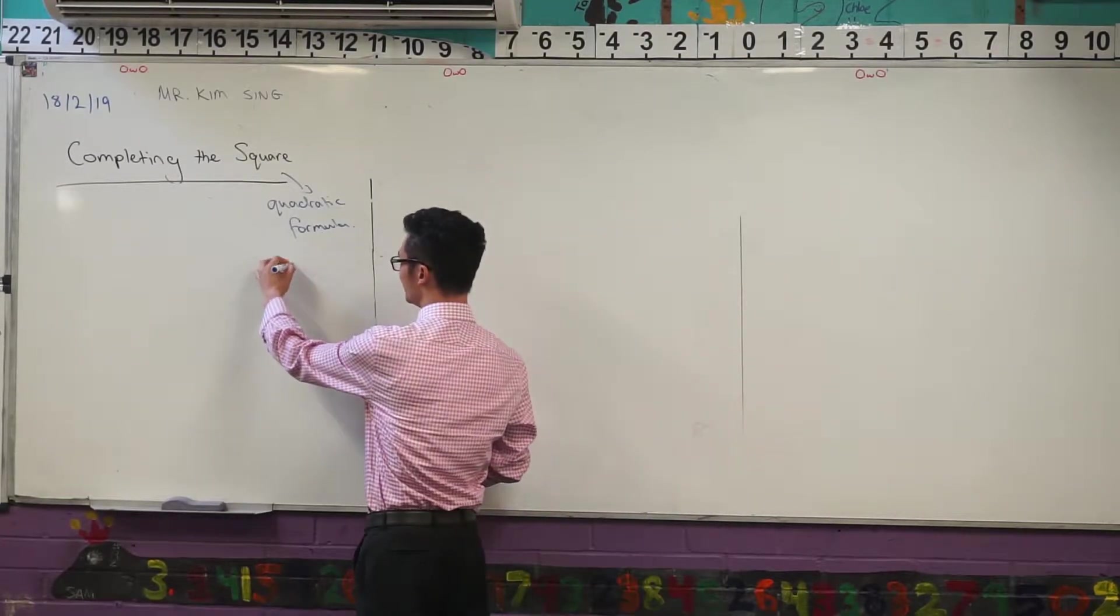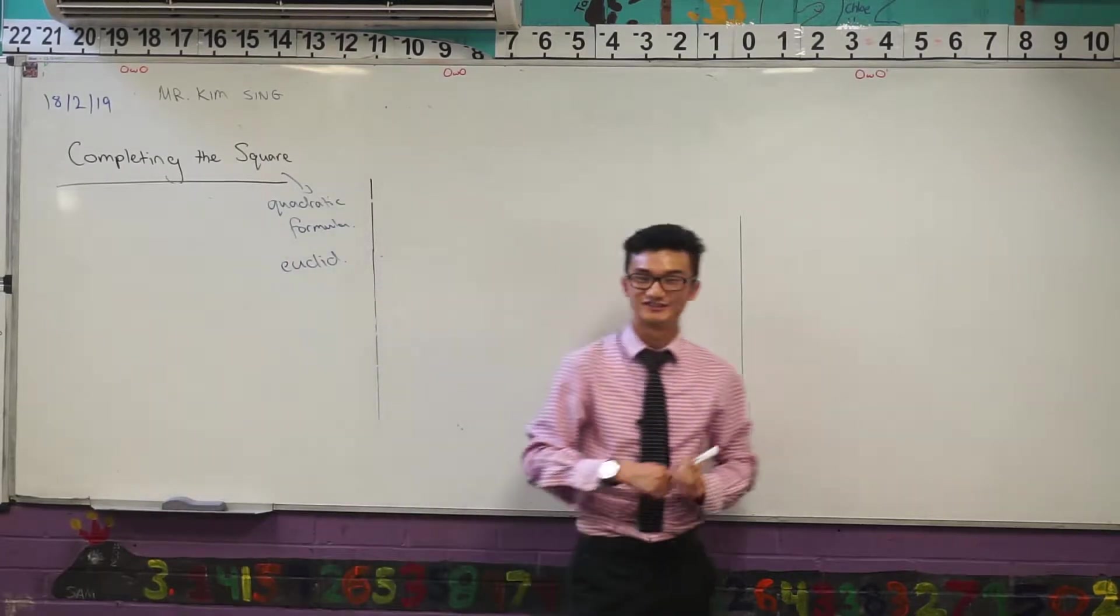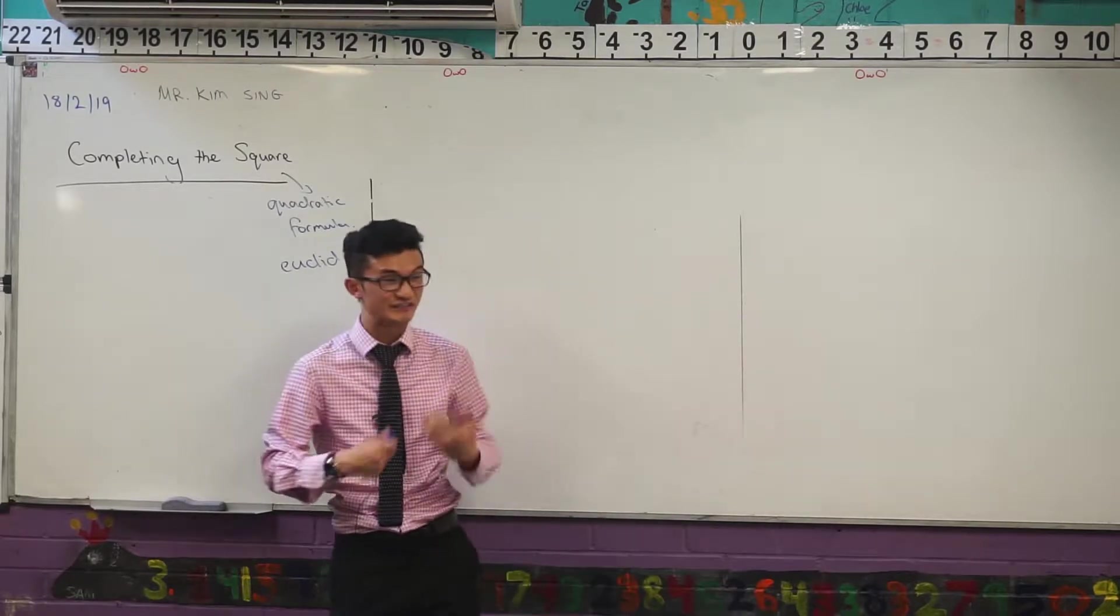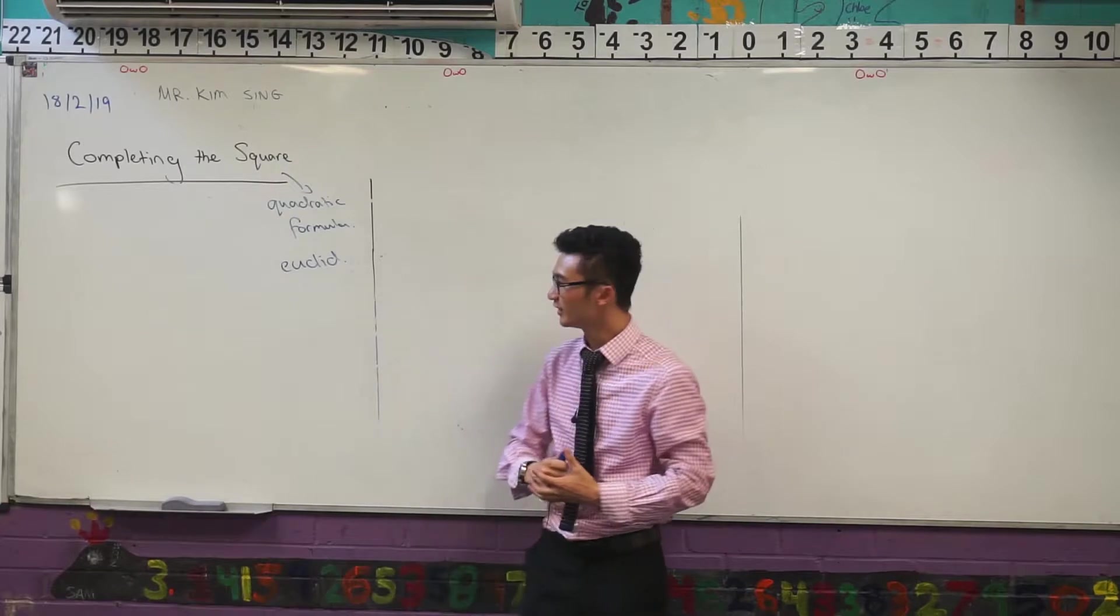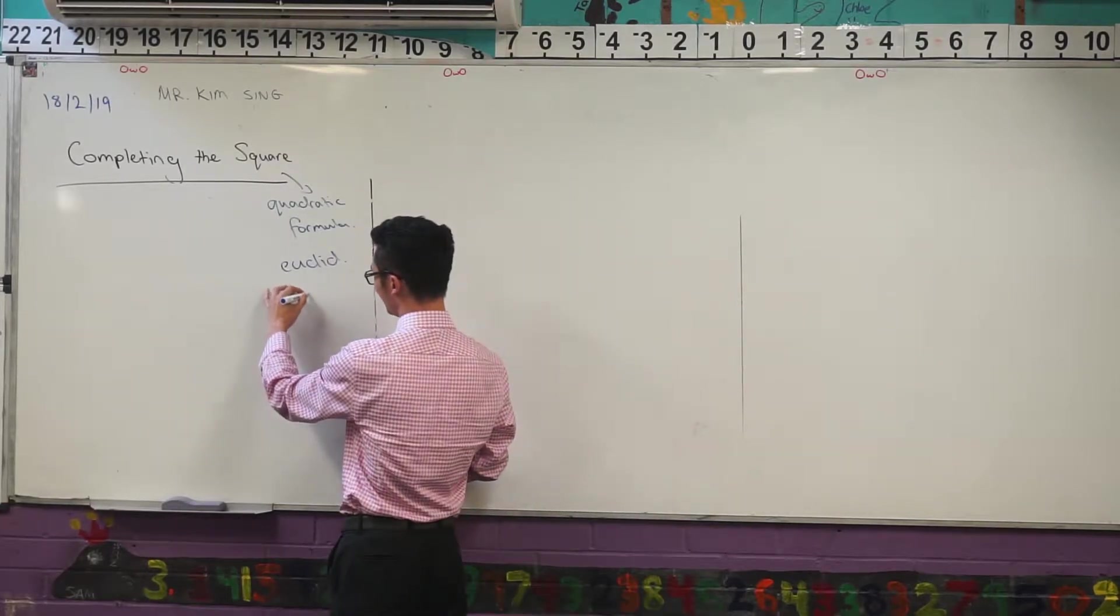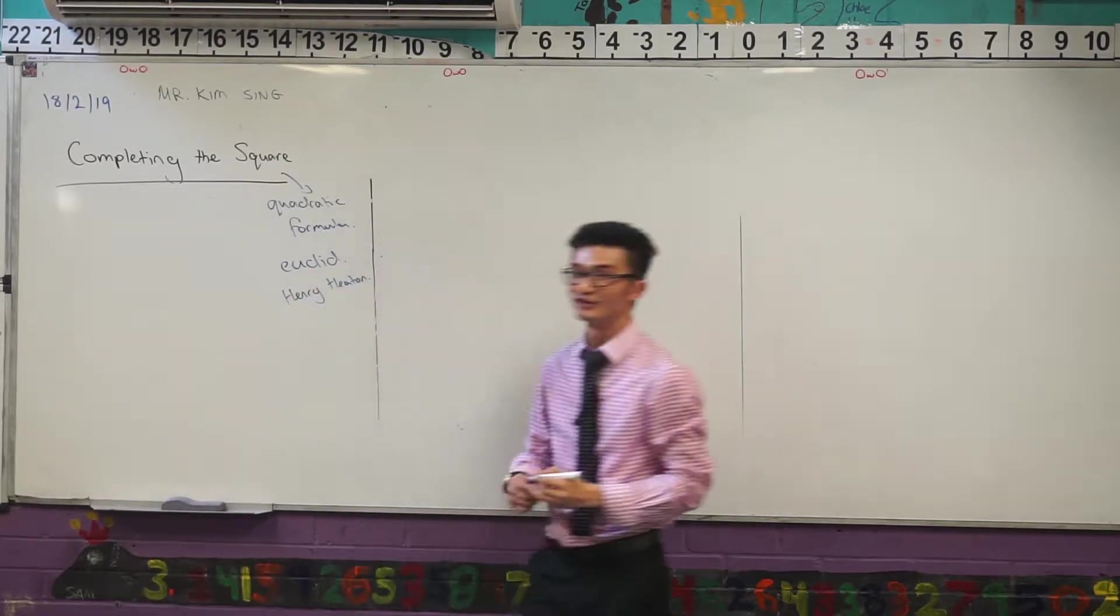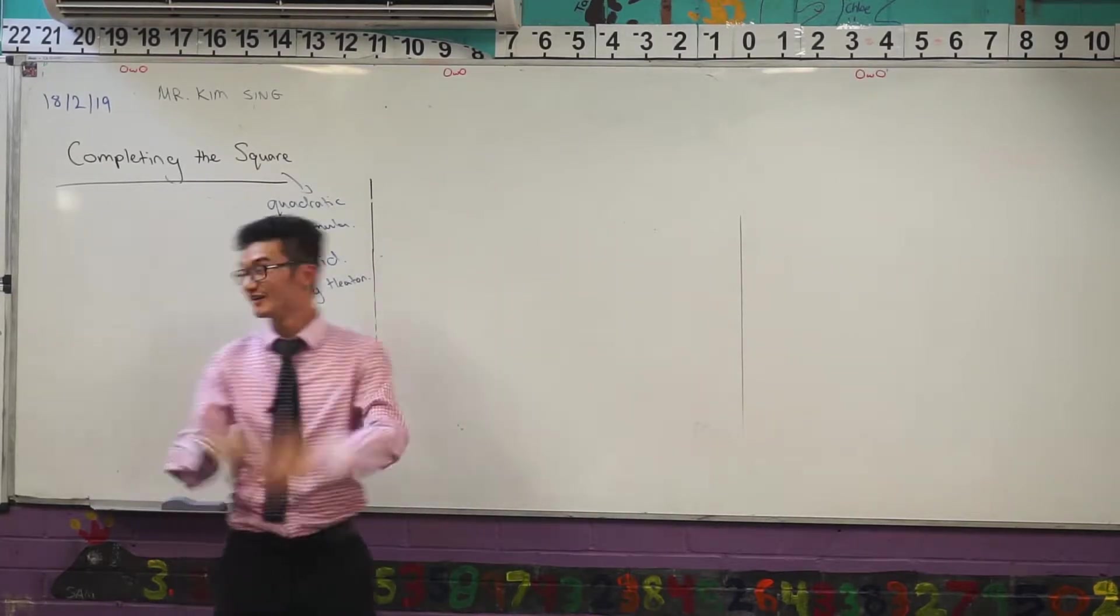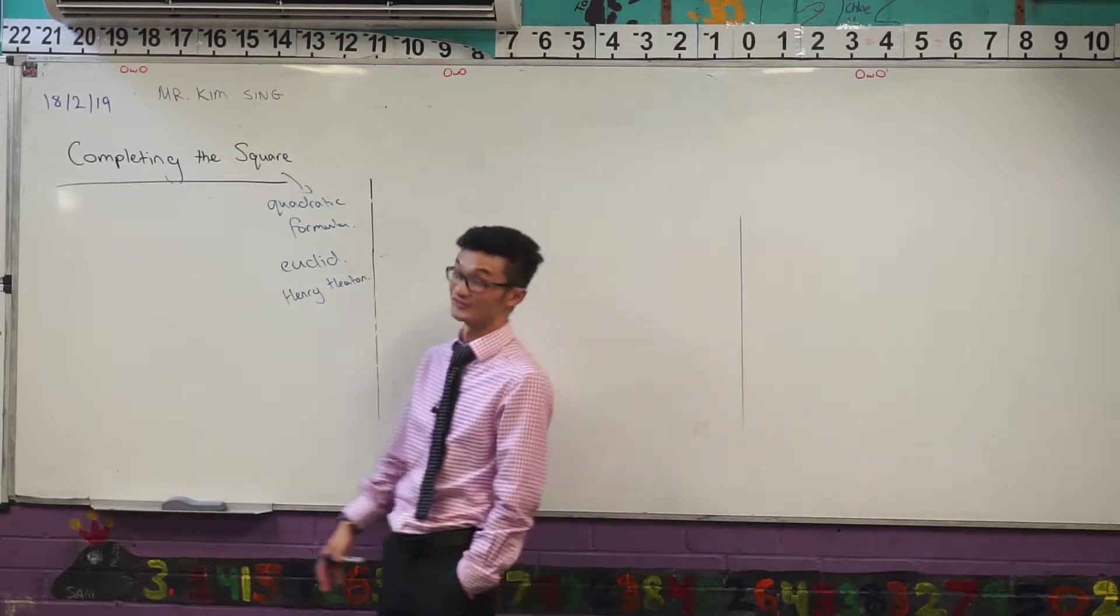For example, Euclid, who we have modern geometry to thank for, came up with a geometrical or visual interpretation of this and we've seen how that can come about when we're completing the square. The one that we're going to look at today, Henry Heaton, is credited for the first modern publication of this, but as we know a whole heap of other people have discovered this on their own as well in different forms.